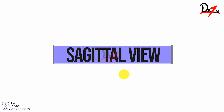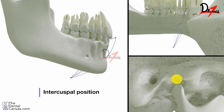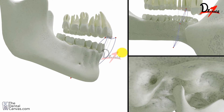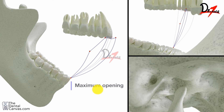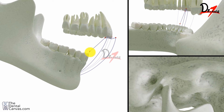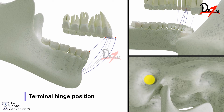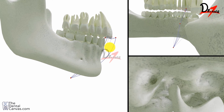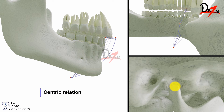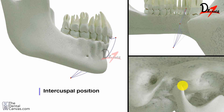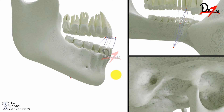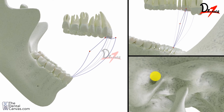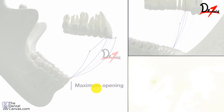Now let us have a look at the sagittal view. You can appreciate the beak tracing here, and we will look at the condyle as well. When we have maximum opening, you can see the condyle gliding forward. This point here is the terminal hinge position — you can see the condyle is in the terminal hinge position. Then we have centric relation here, where the condyle is in the anterior superior position against the slope of the articular eminence, and again the intercuspal position. Then this is the maximum protrusion, and for maximum opening you can see the condyle coming backward.